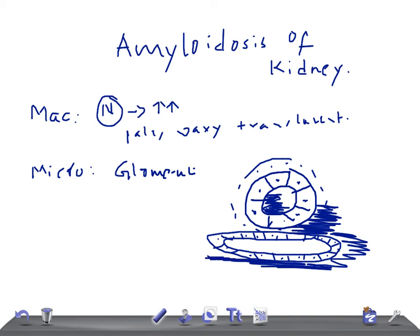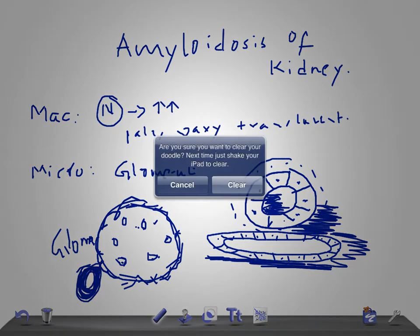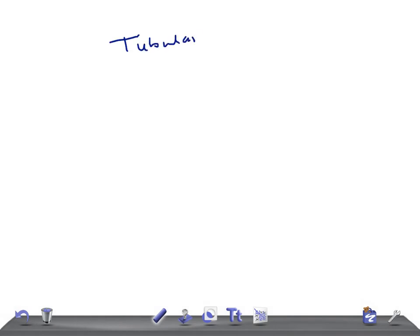The glomerular deposits — if you look at the glomeruli, you can see the cells and the glomerular deposits there. Amyloid also deposits in the blood vessels, causing narrowing. The amyloid deposits in the tubules begin close to the tubular epithelial basement membrane. These deposits may produce degenerative changes in the tubular epithelial cells and amyloid casts in the tubular lumina, as seen in the images.